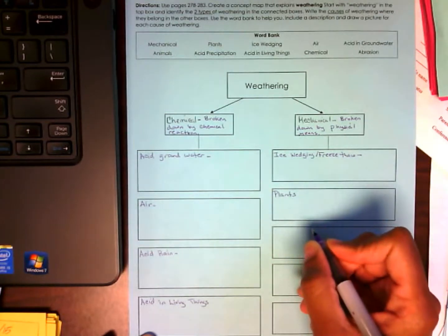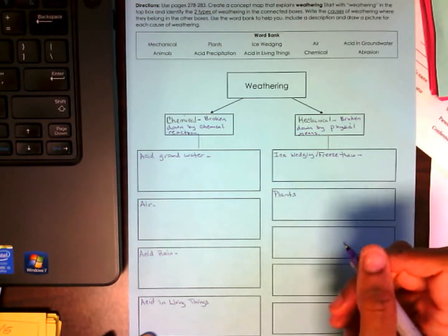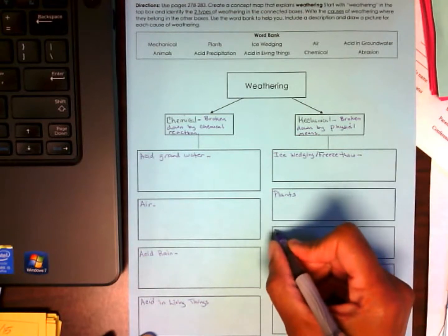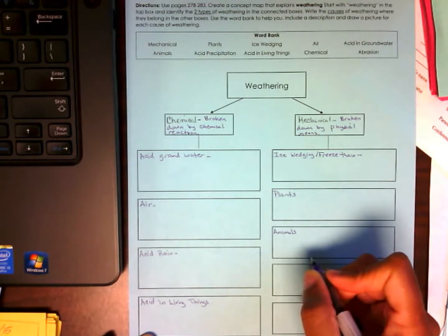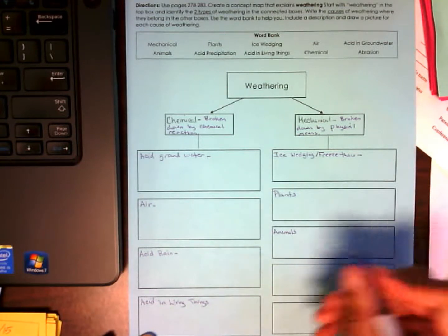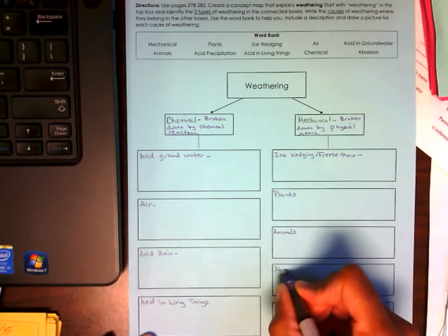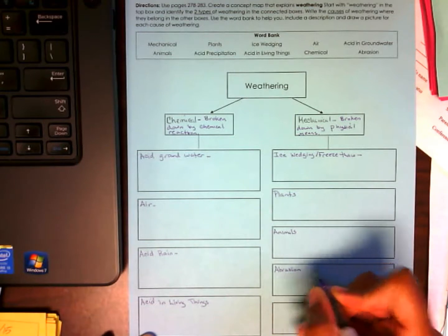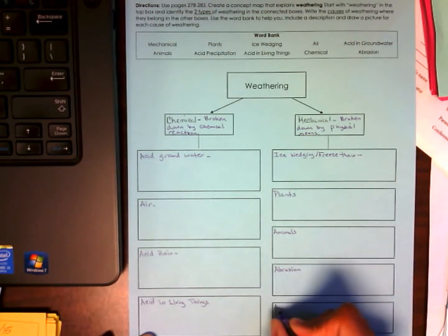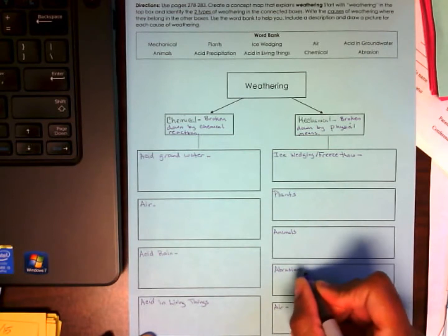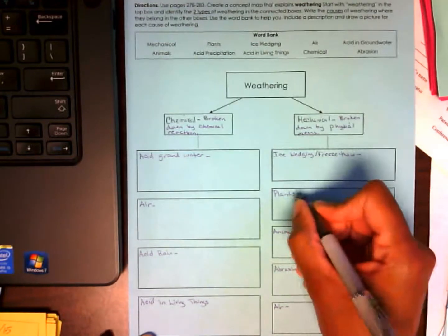What else can I put, Mr. Kennard? Animals. Animals. And Paula. Abrasion. Abrasion. Very good. And there's one more because remember I said one will be used twice. Go ahead, Herson. Air. Air. Excellent.